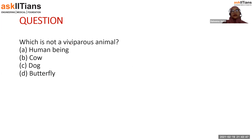Which is not a viviparous animal? Viviparous animals are those which give birth to young ones — human beings, cows, and dogs do. But a butterfly does not, so the correct answer is butterfly.